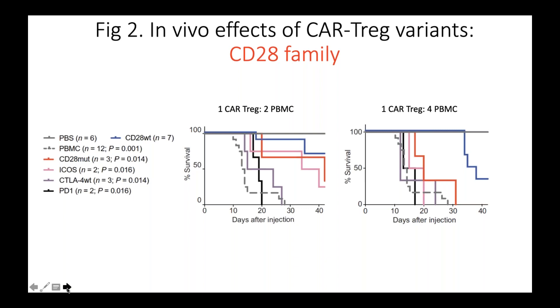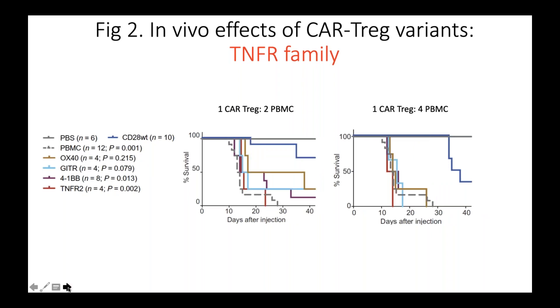These are the data from testing the CARs from the CD28 family members. You can see at the one to two ratio that this wild type and mutant CD28 were actually not significantly different from each other. But when you went down to the one to four PBMC ratio, you can clearly see that the wild type CD28 was significantly better than the CD28 mutant. And similarly for ICOS, the ICOS-CAR was pretty good at the higher ratio, but not at the lower ratio.